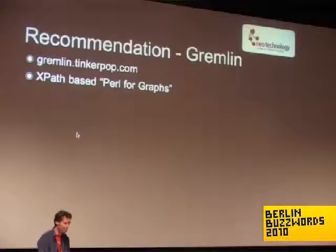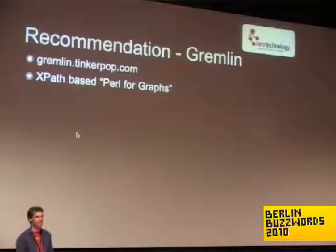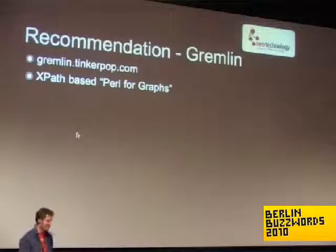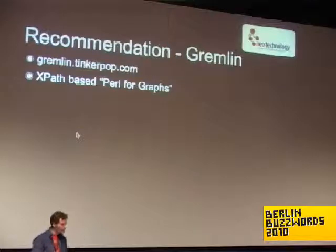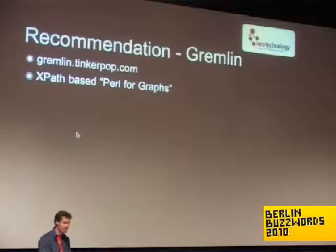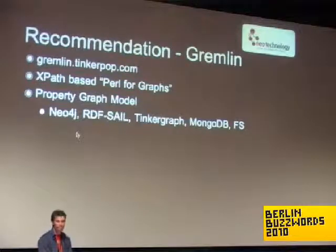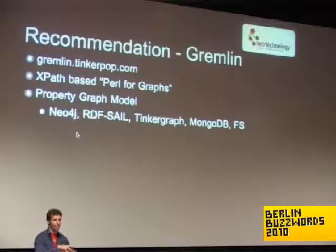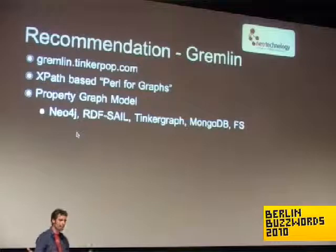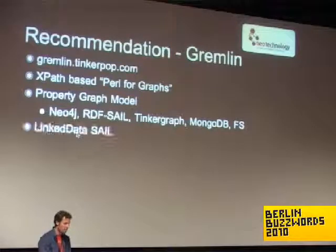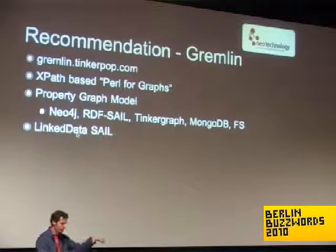Gremlin — we call it Perl for graphs. It's XPath-based with a lot of curly stuff. It's very effective, though not super nice syntactically. It goes over the property graph model and has a number of implementations, including MongoDB, since a document model is kind of a poor man's graph — just a hierarchy instead of a network. And there's a SAIL gateway.